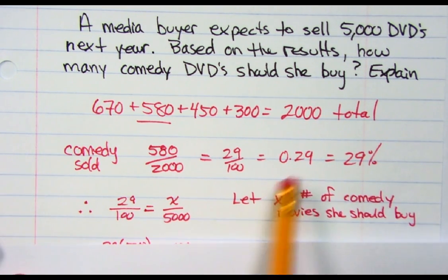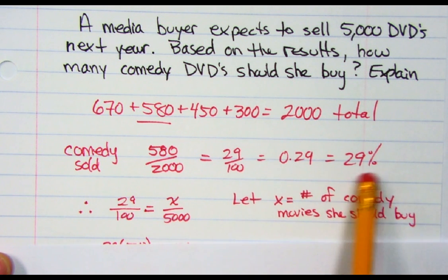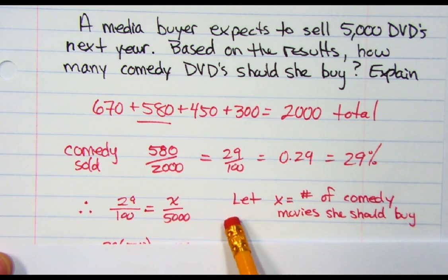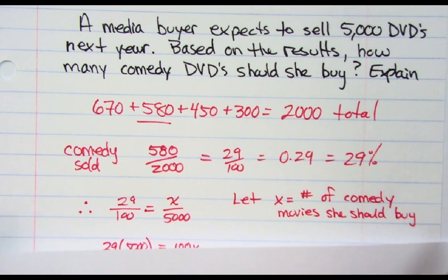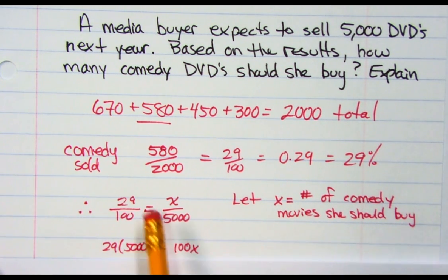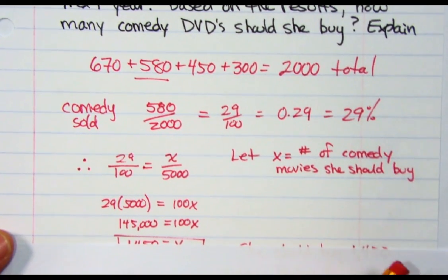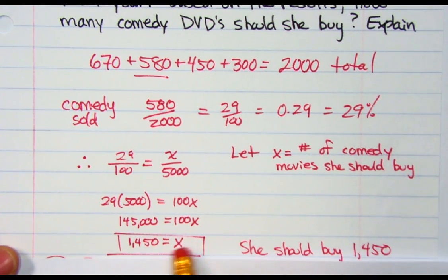This is experimental probability, right? This is what we actually sold. And what we're going to find out right now is theoretical. In theory, if this stays the same, we can do some cross-multiplying and find out that the answer to this would be 1,450.